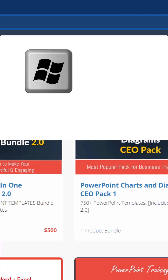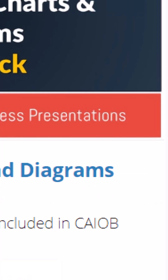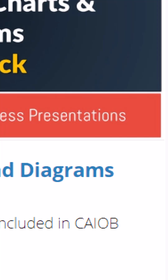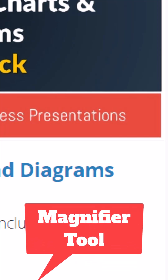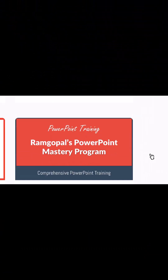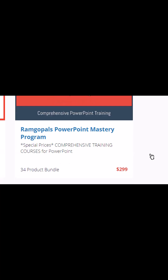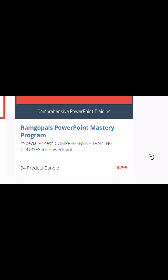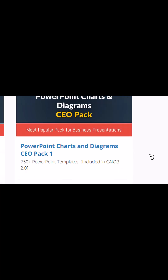You use a shortcut called Windows and Plus. The moment you do that, the magnifier tool gets activated. You can scroll down with your mouse wheel and you'll be able to go down to any level you want.